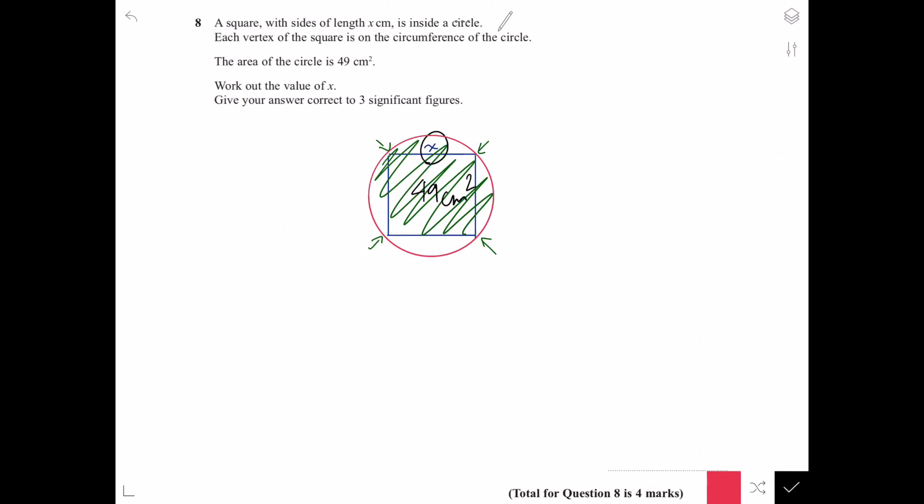Work out the value of x and give your answer correct to three significant figures. First of all, we will find the diameter of the circle which is also the diagonal length of the square.